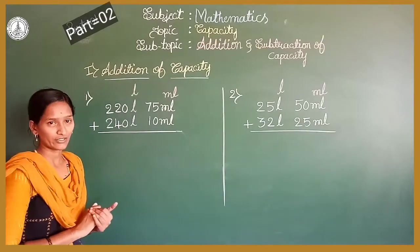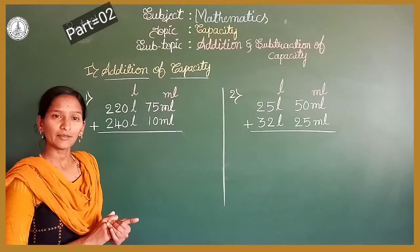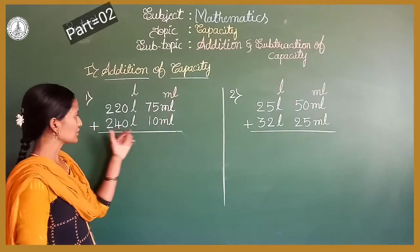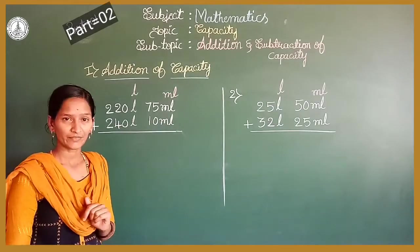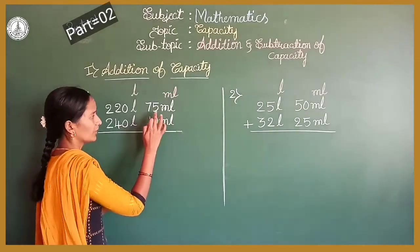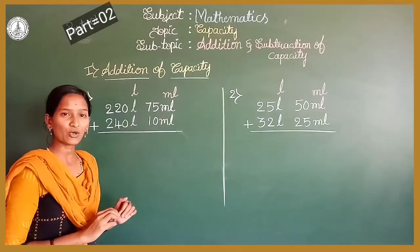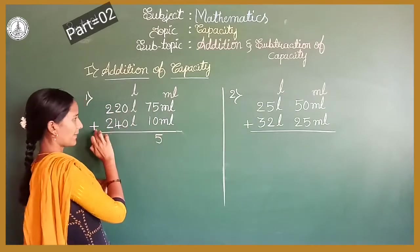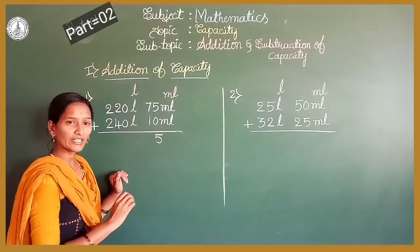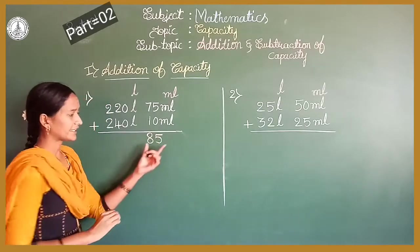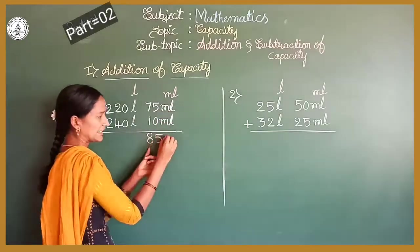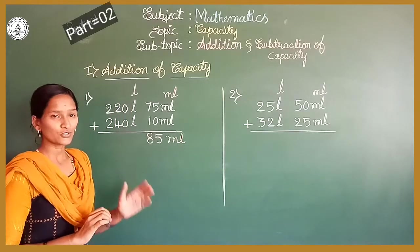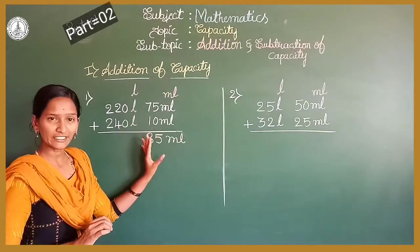Which numbers are in millilitres? 75 millilitres plus 10 millilitres. 5 plus 0 is 5. Write down 5. Next, 7 plus 1 is 8. So it is 85 millilitres. Don't forget to write this unit. Students, we finished the millilitre part.